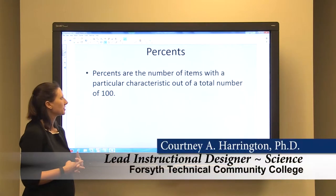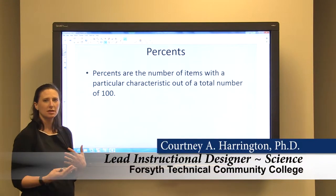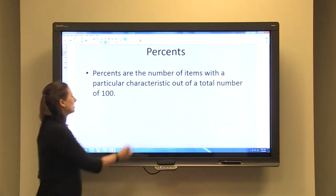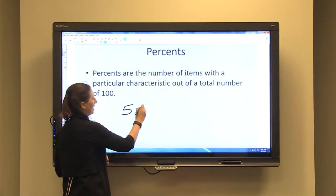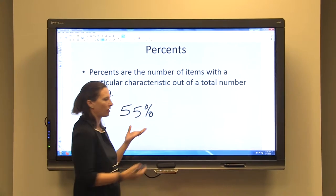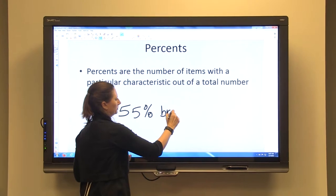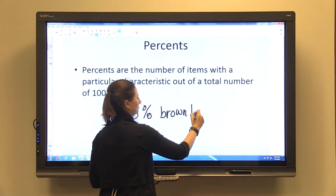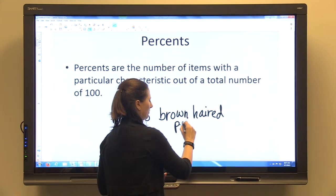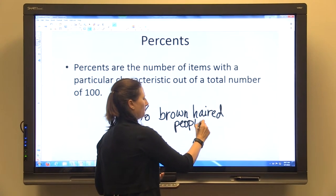So percents, percents are the number of items with a particular characteristic out of a total number of 100. So say you have 55% of people with brown hair in a room.